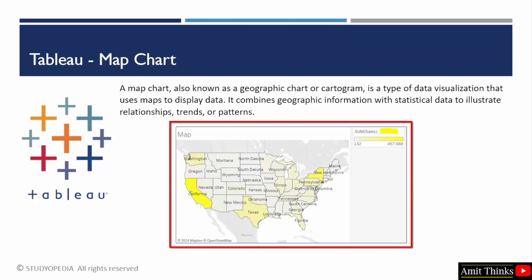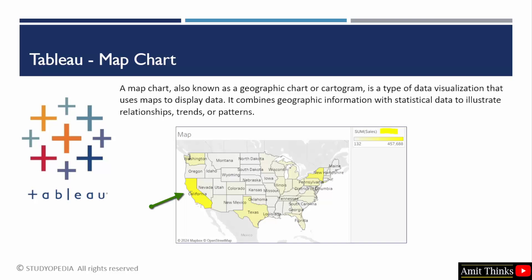Like in the image, we are showing the sum of sales. The darker color is displaying California — that means the maximum sales is in California. And in this way, we can represent a map.